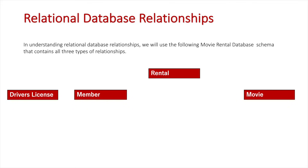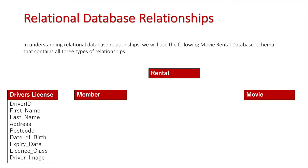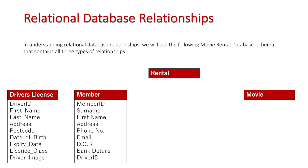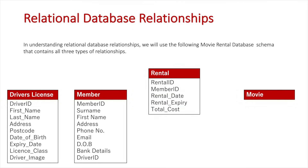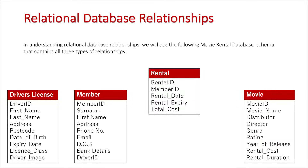Driver's license holds all details about a person's driving credentials and is used to verify a member's identity. Member holds all their details so they can be referred to by the system and be eligible to rent movies. Rental allows members' rents to be recorded on the system every time they rent a movie, and movie holds the details of the movies being rented.